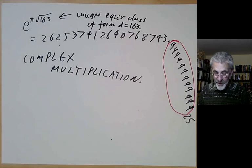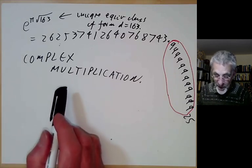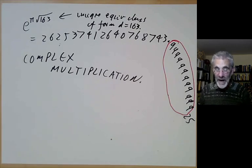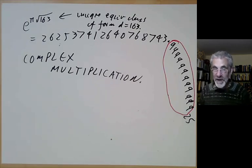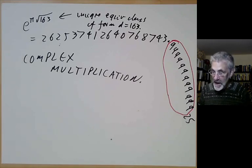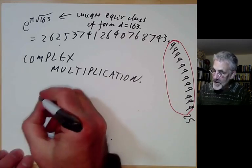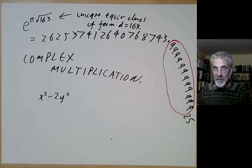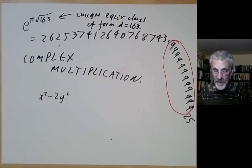That's about all I want to say for now about positive definite forms. We haven't yet said very much about indefinite forms. Next lecture, I'll give some examples of indefinite forms, such as x² - 2y², and try to determine which primes can be written in that form.